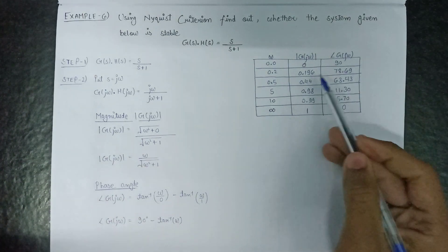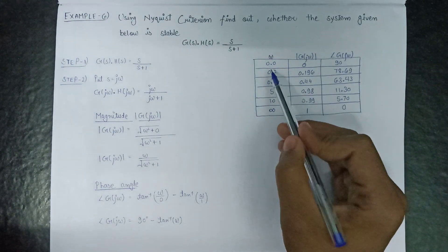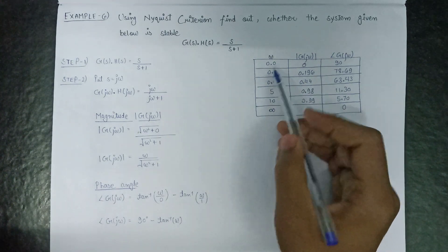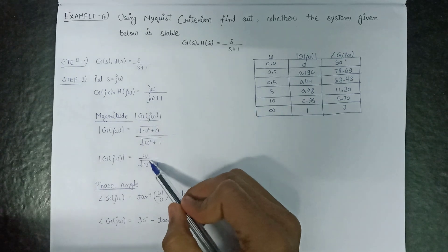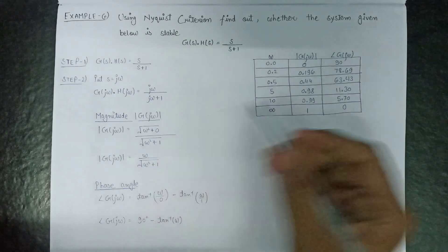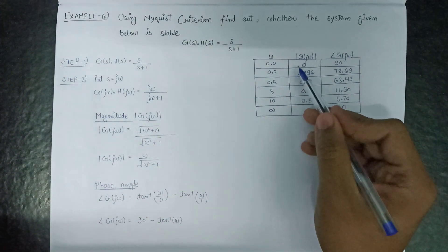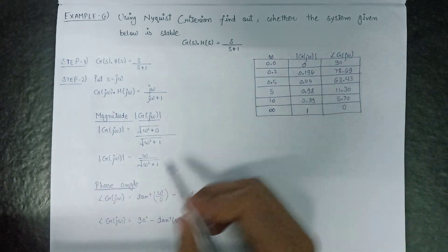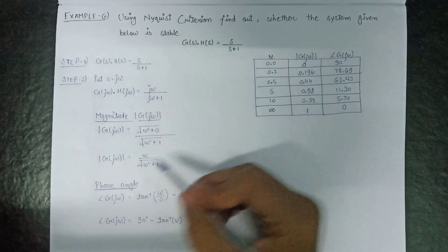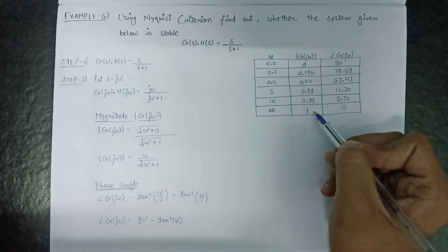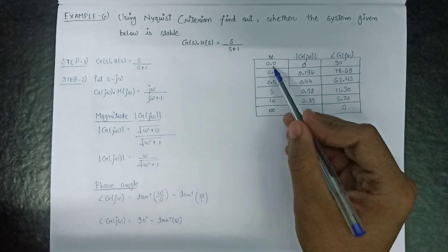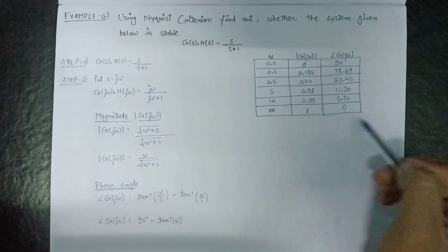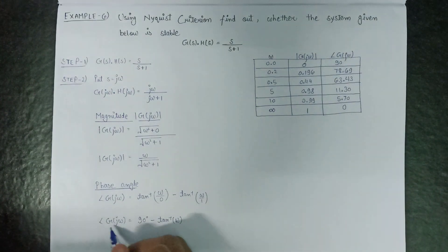These are all the values obtained by putting ω equals to 0.0, which gives a magnitude equal to 0. For the various values of ω we calculate the magnitude and the phase angle using the respective formulas.